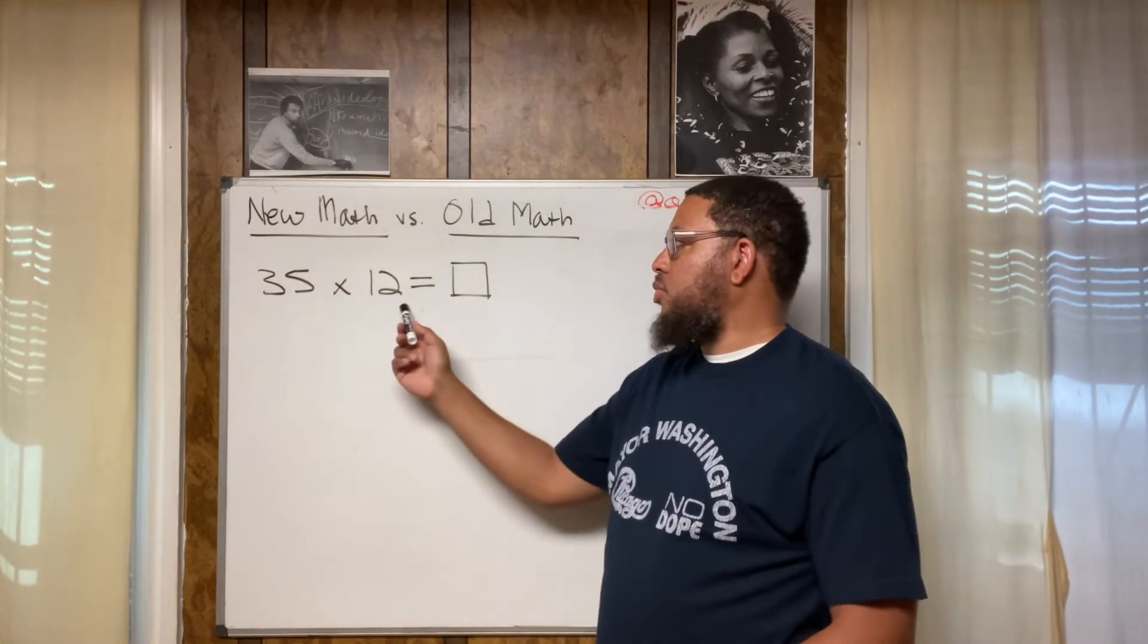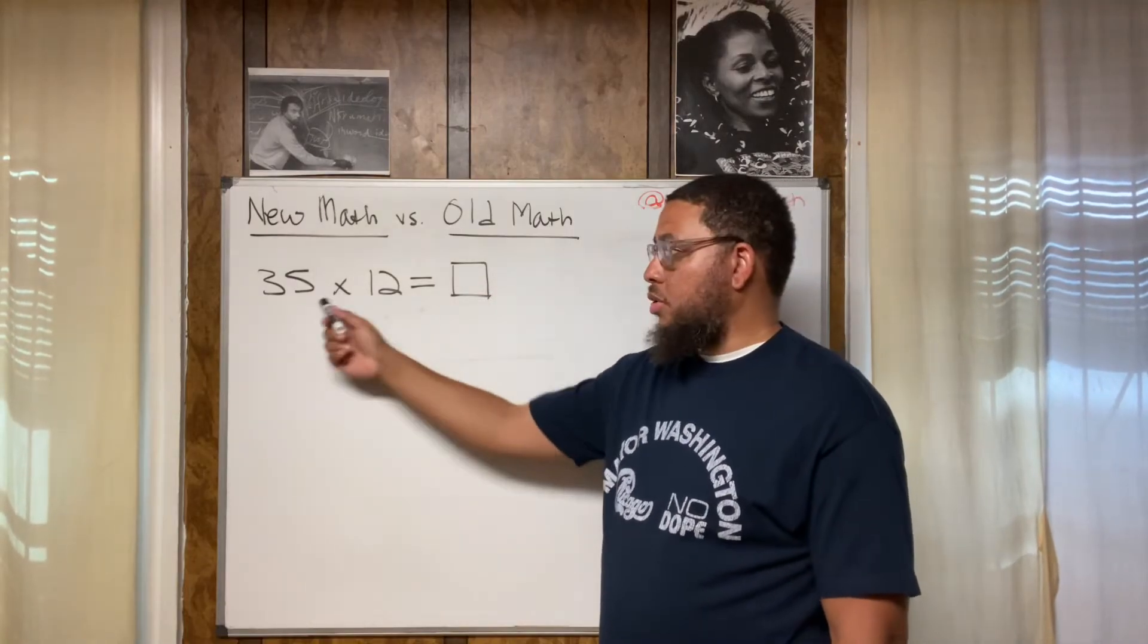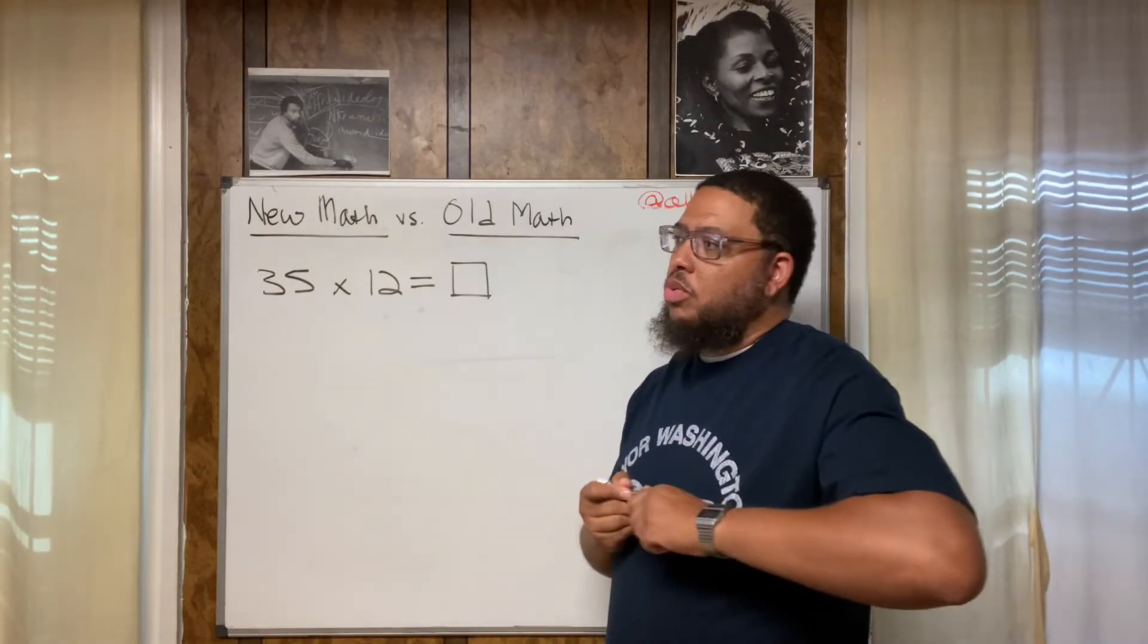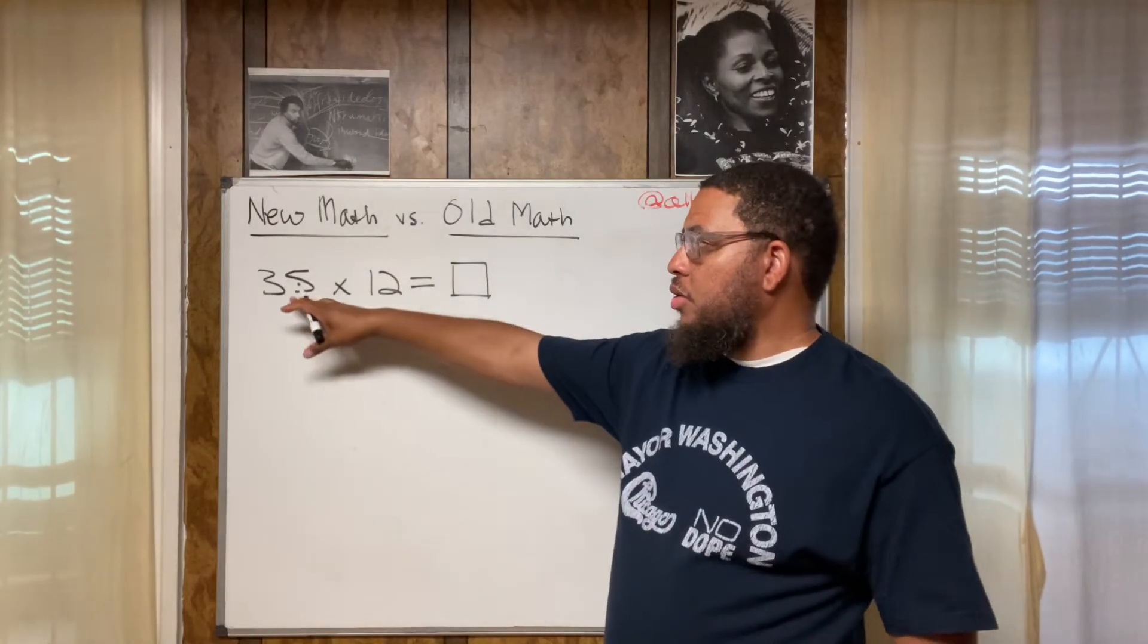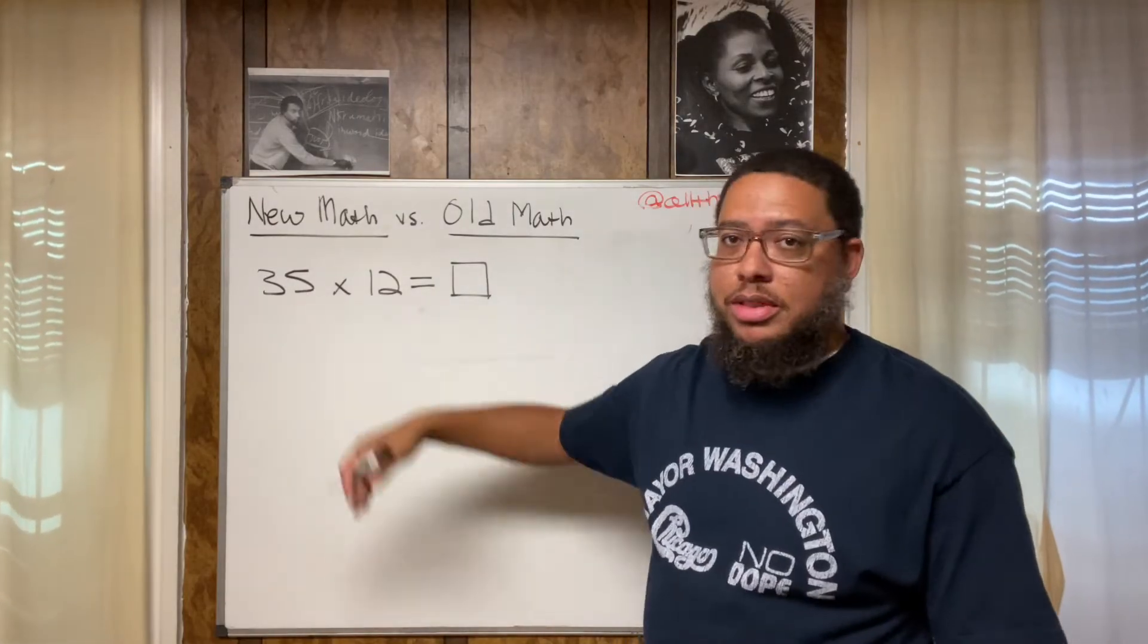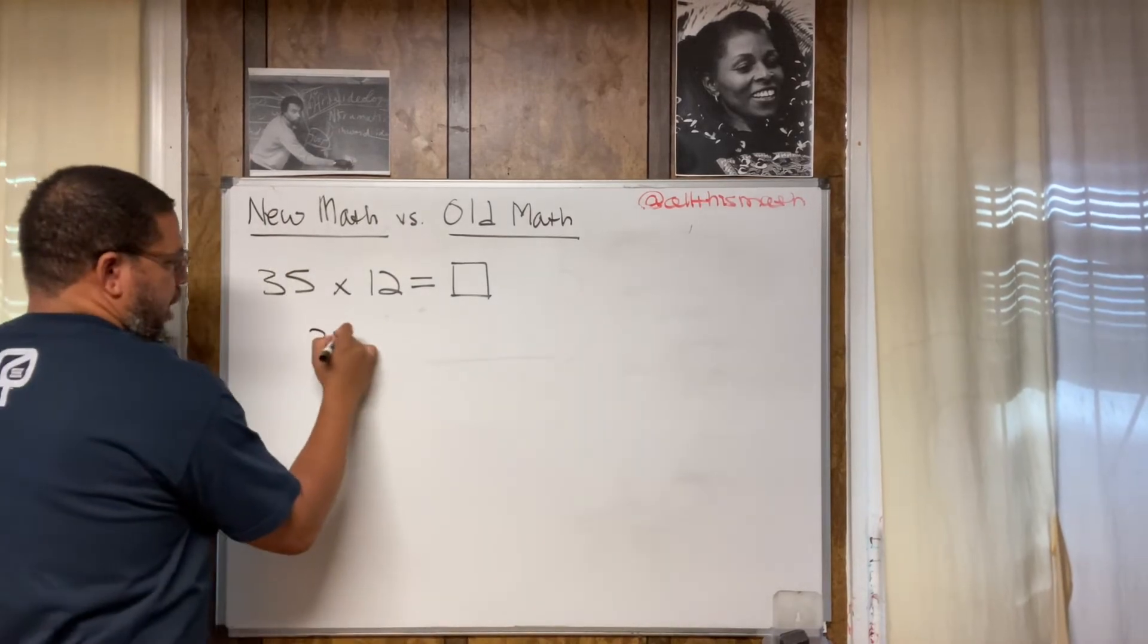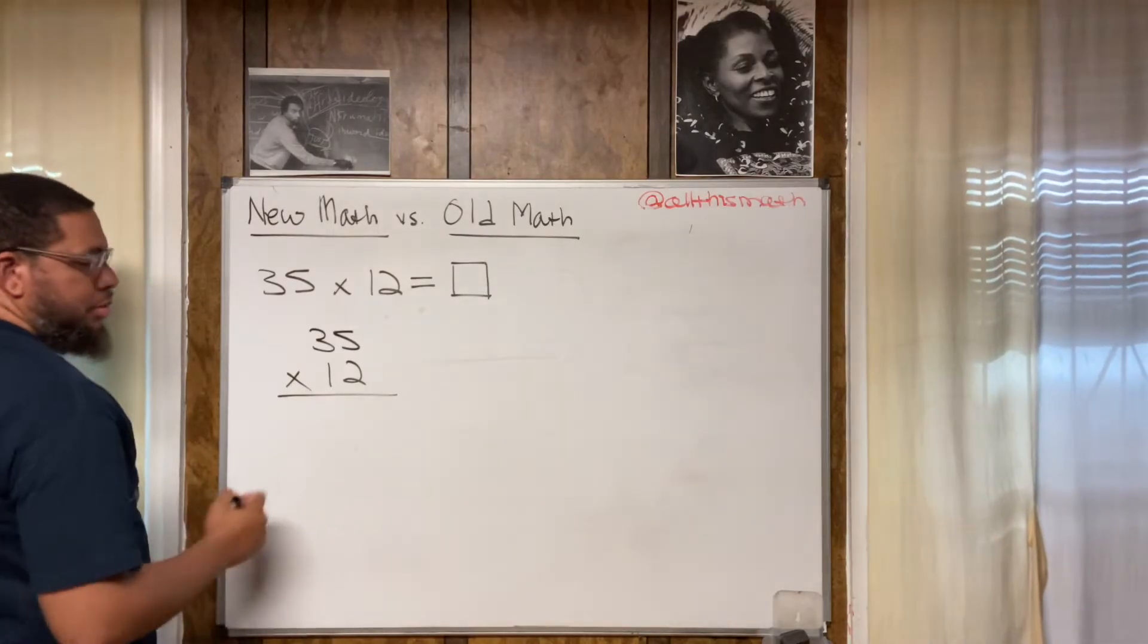All right, so let's check this out. We got 35 times 12. We want to know what the product is, right? The product is the result you get when you multiply numbers together or expressions or terms. So 35 times 12. So somebody would probably say that the old math would require stacking the numbers on top of each other like this, so like 35 on top and then the 12 underneath. Draw the horizontal bar. Put the X for multiplication.